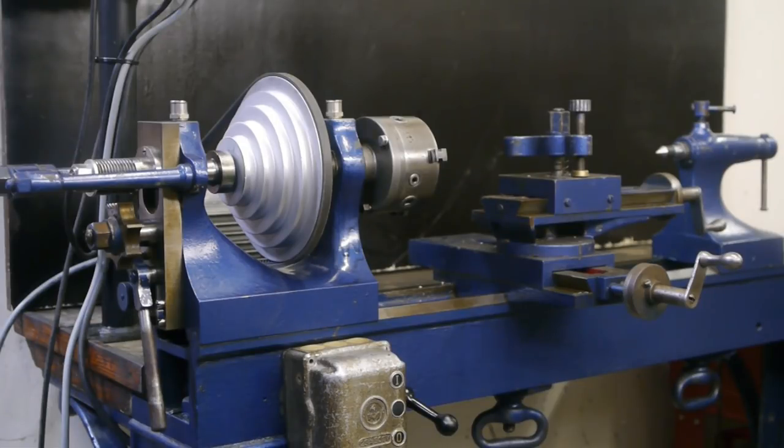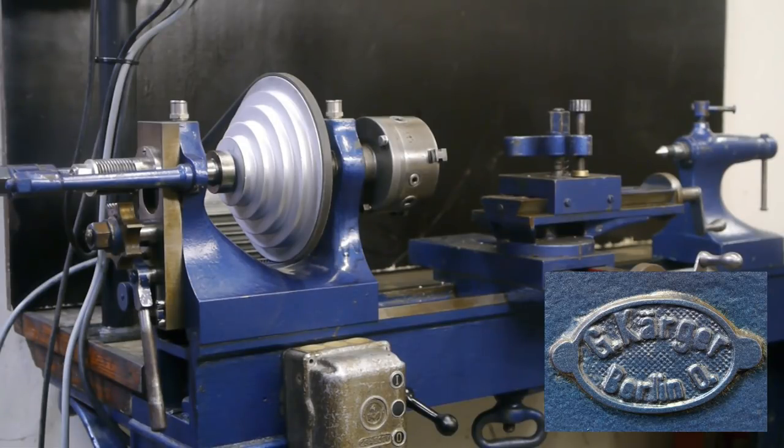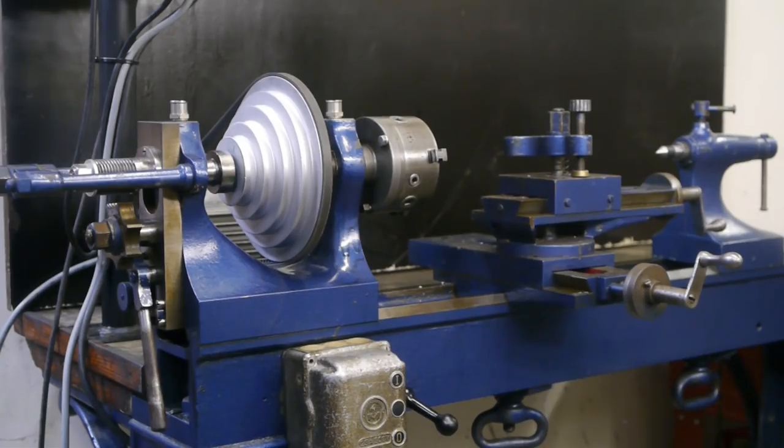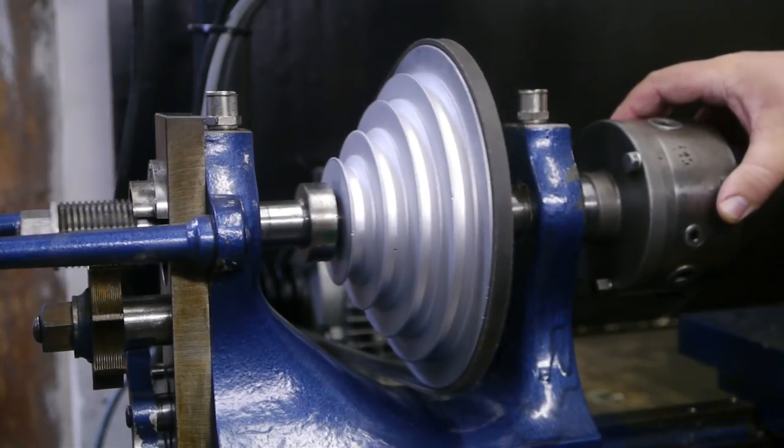This is my vintage German-made Carrer bench lathe, or maybe it's called a pattern maker's lathe—I guess the name probably depends on where you live in the world. It's about a hundred years old and has an old-school sliding spindle threading mechanism.